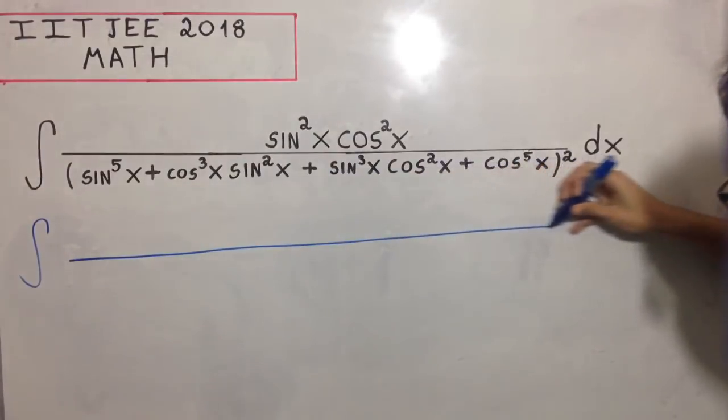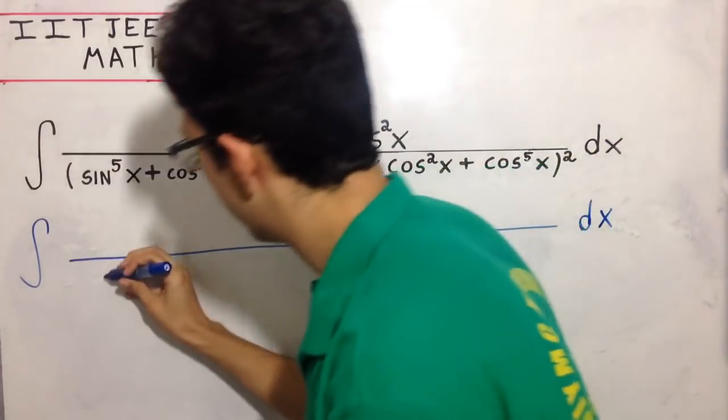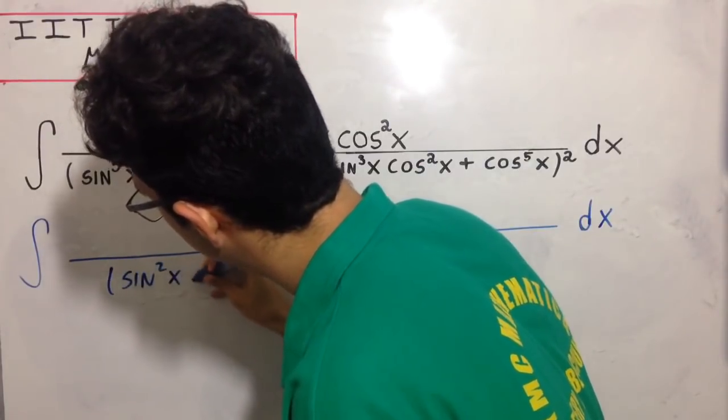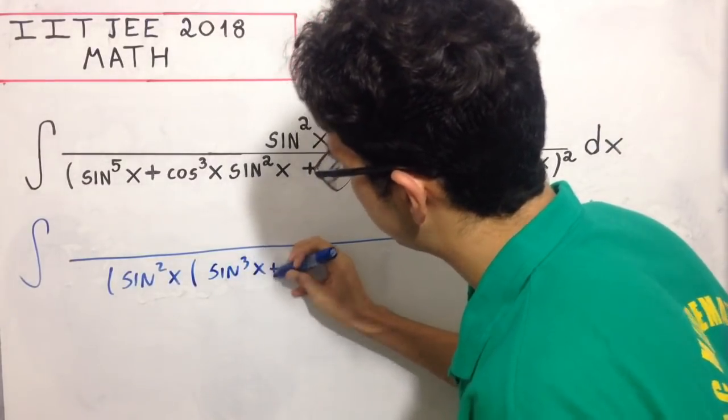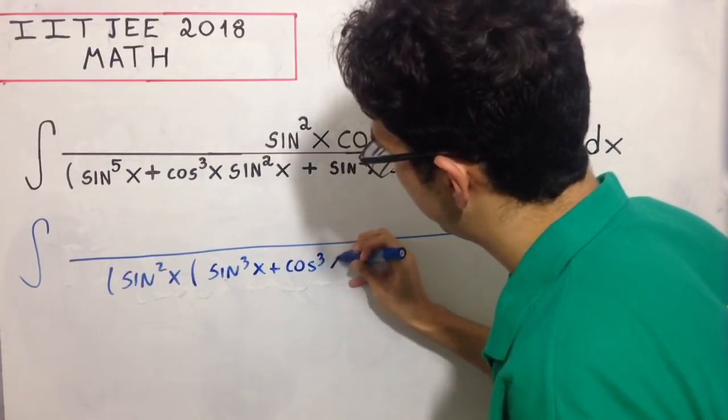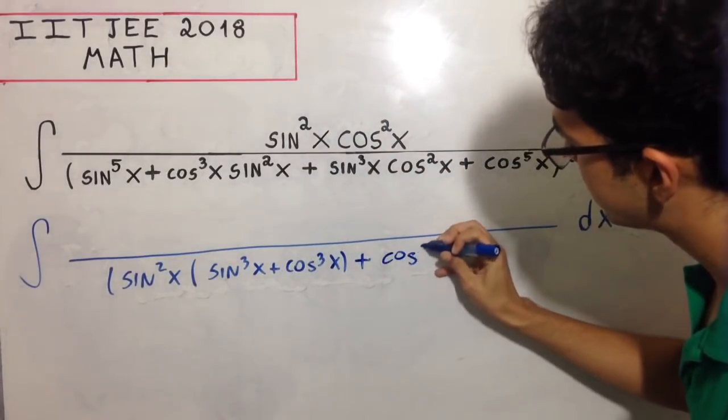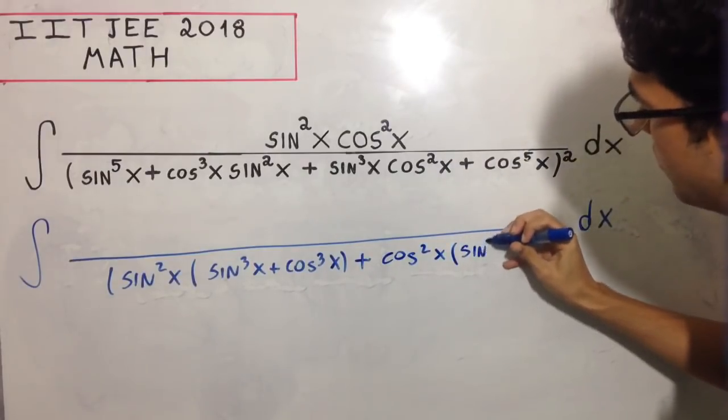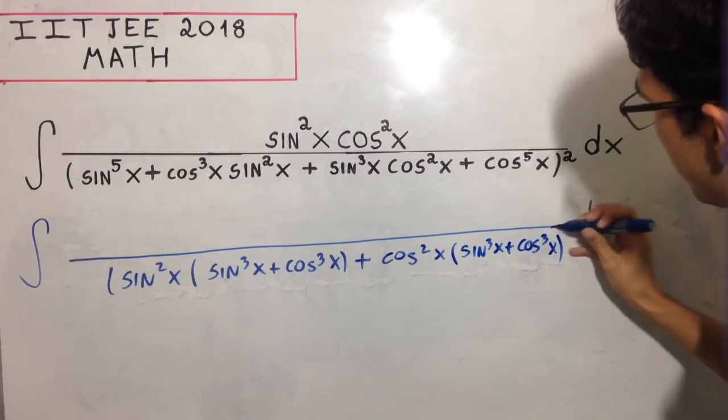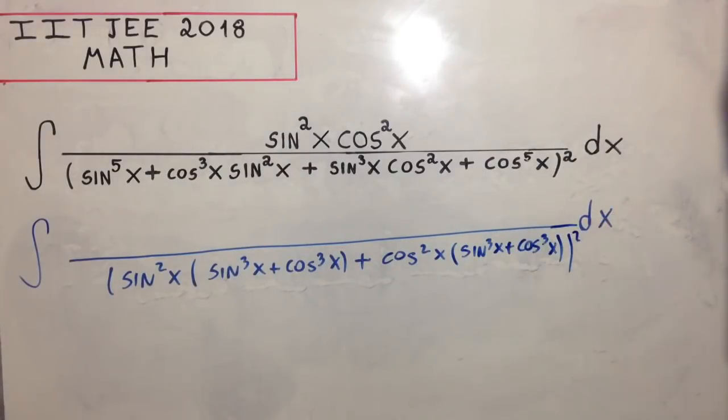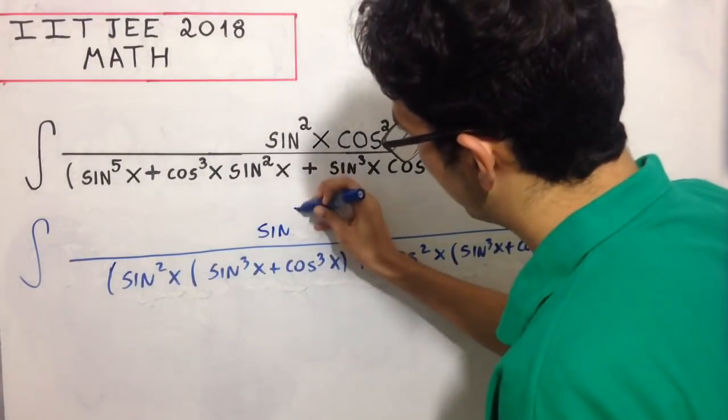So the integral becomes dx times sin²x cos²x in the numerator. The denominator is sin²x times (sin³x + cos³x), but I can't forget the cos²x factor, so it's sin²x(sin³x + cos³x) + cos²x times something.